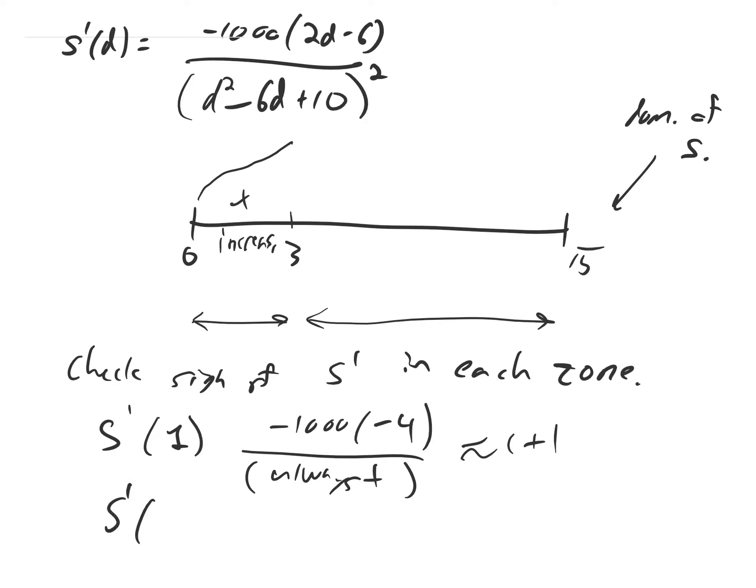Next, let's check the sign of s prime in the next zone. Try s prime of 4. So if we plug a 4 in here, we've got negative 1,000, 2 times 4 minus 6 over some stuff squared. So we've got negative 1,000. 8 minus 6 is positive. The denominator is always positive. So this is going to be some negative number. That means the derivative is negative in this zone, and it's decreasing. Which means that the function looks something like this.